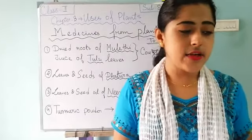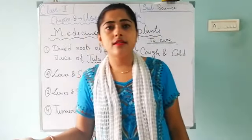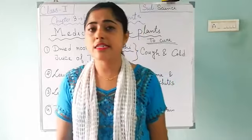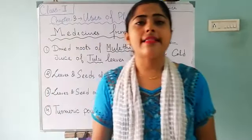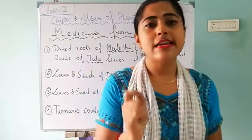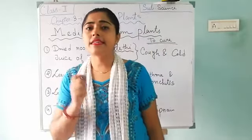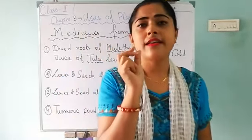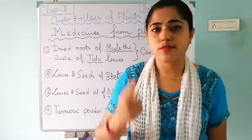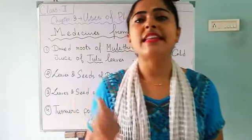Next, the third plant — the leaves and seed oil of neem. We already know the neem tree from the previous chapter. This is a big tree with a big trunk. Every part of the neem tree is very useful. Its leaves are the most important and most useful part. Its seeds also produce small fruits from which we make oil — which we call neem oil.